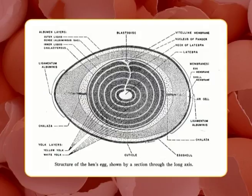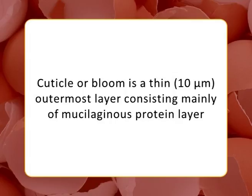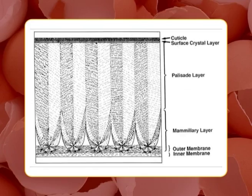The four shell layers are: cuticle, spongy layer, mammillary layer, and outer shell membrane. The cuticle, commonly known as bloom, is a thin (~10 micrometer) outermost layer consisting mainly of mucilaginous protein. It blocks the pores and protects the egg against outside contamination. The spongy layer constitutes the greater part of the shell and is traversed by numerous microscopic channels.